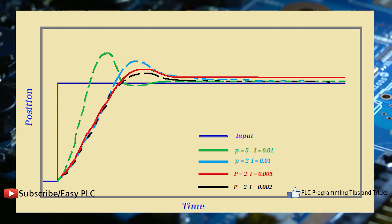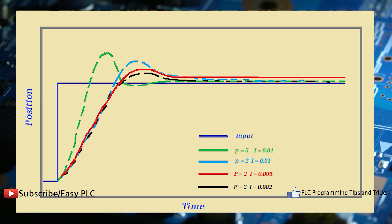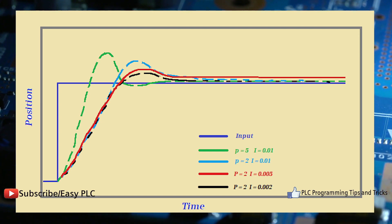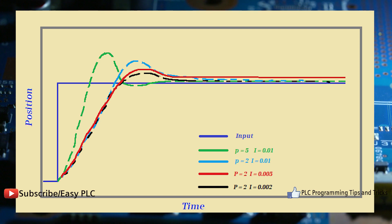In above figure, as the gain of the I controller decreases, steady state error also goes on decreasing.